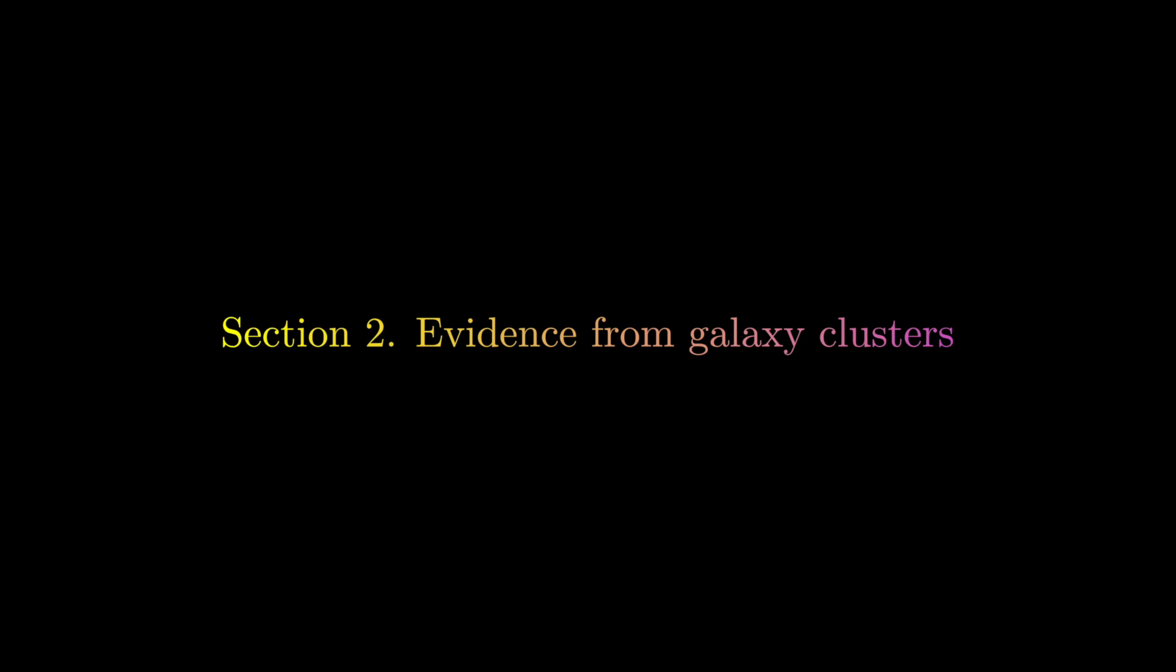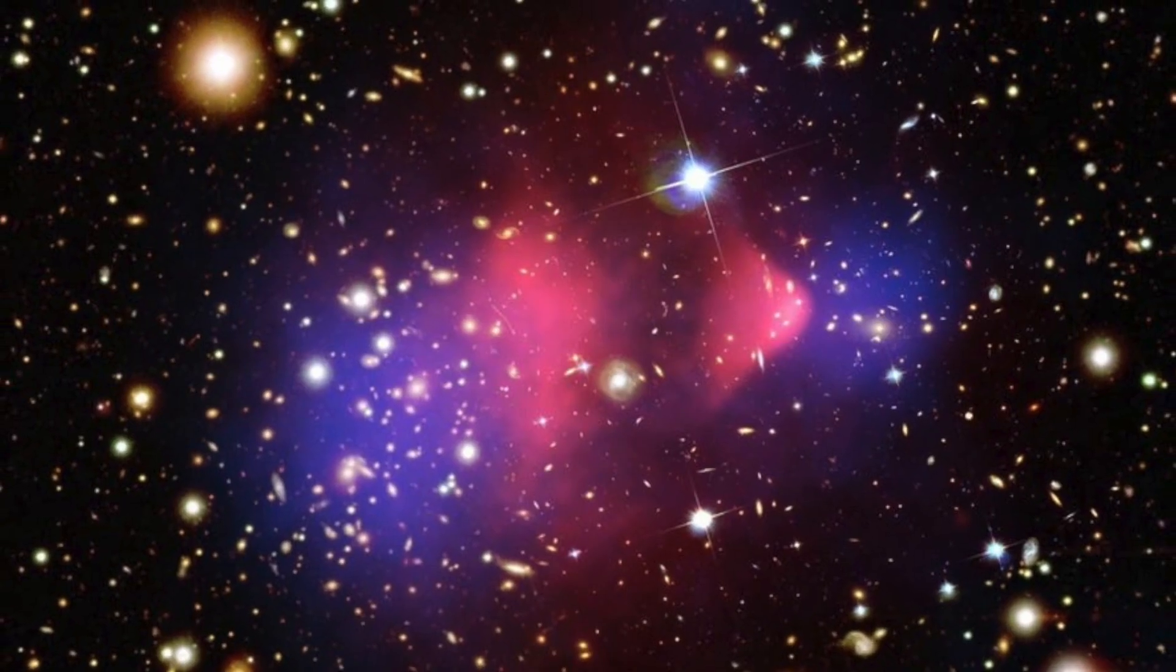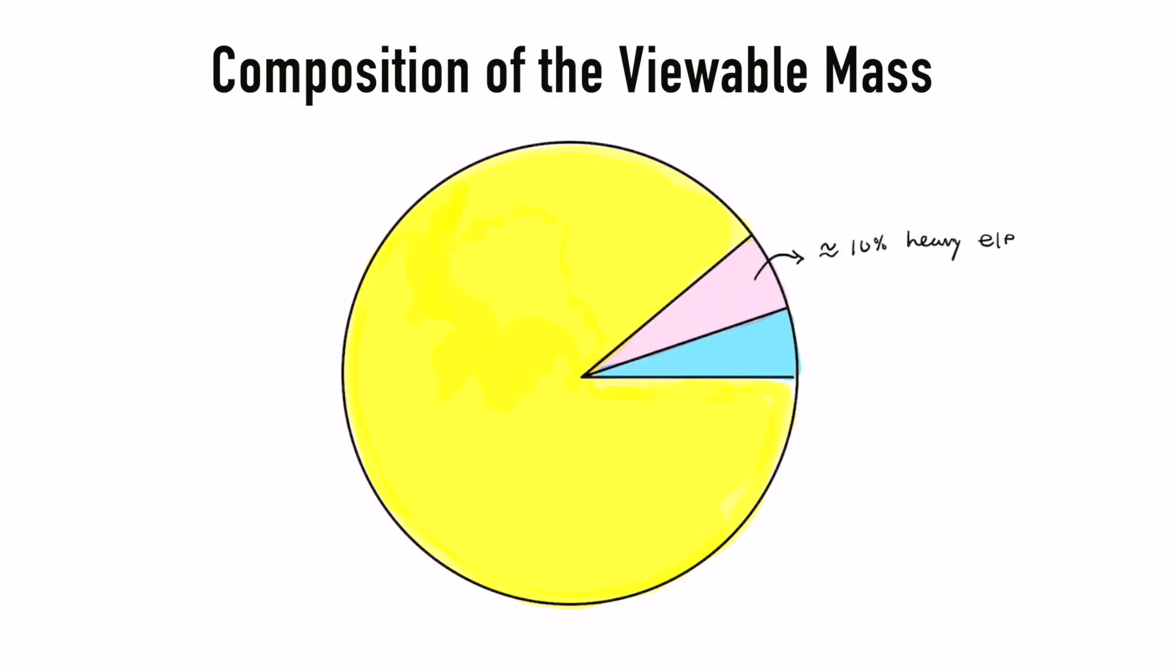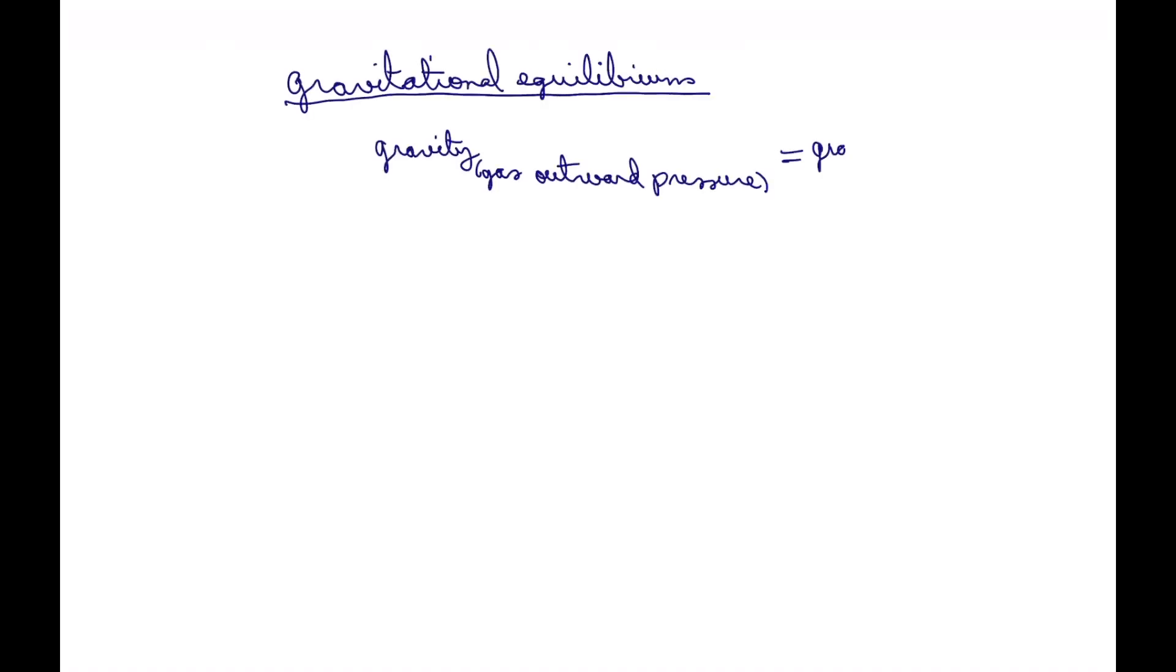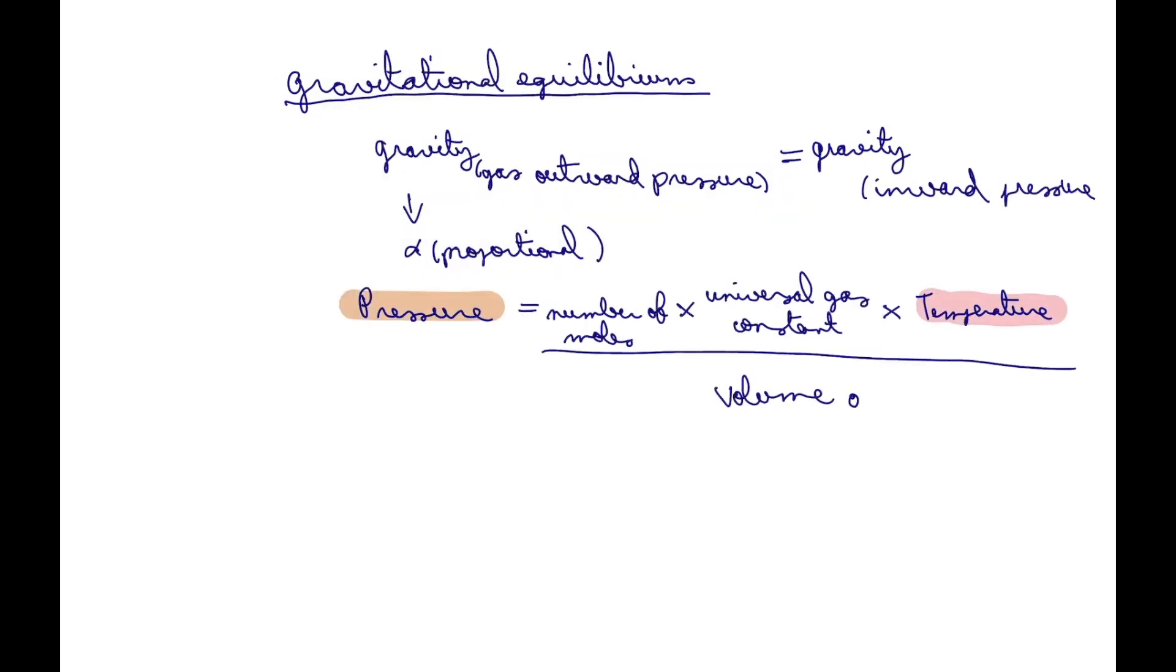The Bullet Cluster is comprised of two galaxy clusters that collided with each other. The majority of its viewable mass comes from interstellar gas and stars. All of this gas is in gravitational equilibrium, meaning that the gas's outward pressure equals gravity's inward pull.